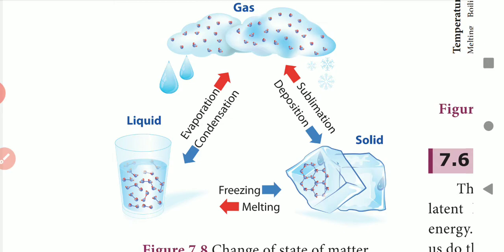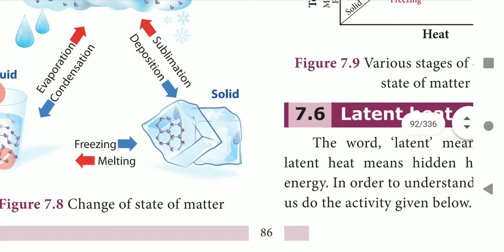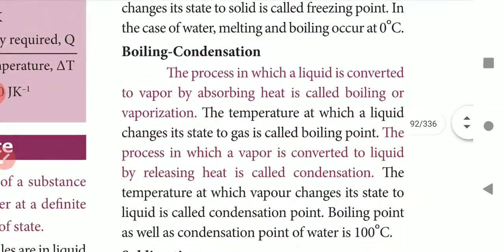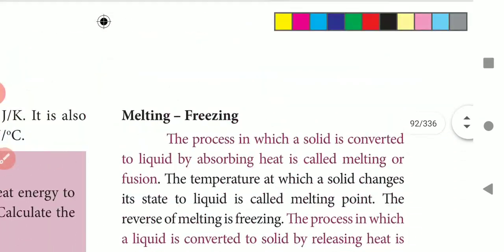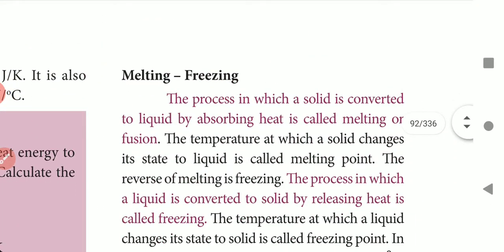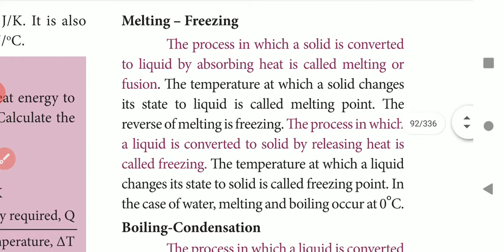Through condensation, vapor converts back to liquid. These are the processes in the changes of states of matter. The first processes to look at are melting and freezing.